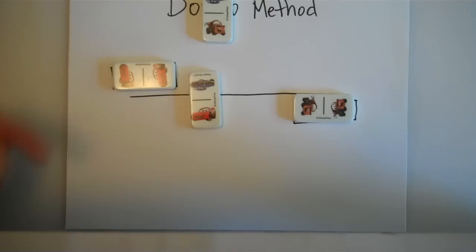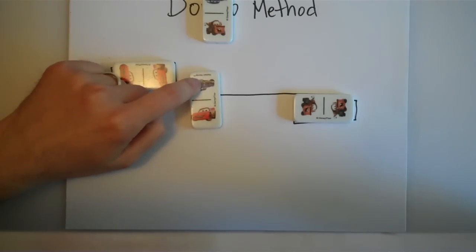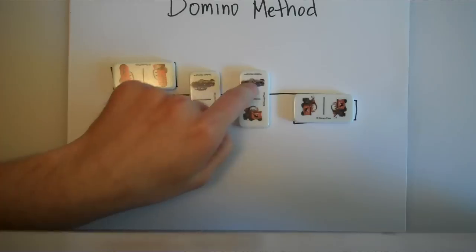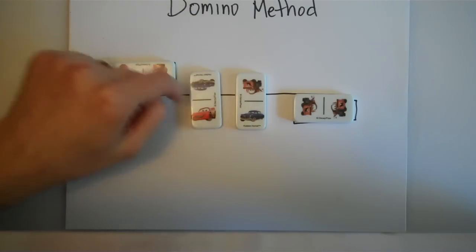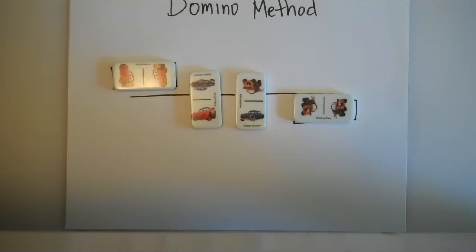Obviously I can't stop here because even though I've cancelled out Lightning McQueen, now I have the Hudson Hornet up here on top. So I can use the second domino, and again I would have to flip it so that Lightning McQueen cancels, then the Hudson Hornet cancels, and then Mater cancels. Now I know that I can stop.